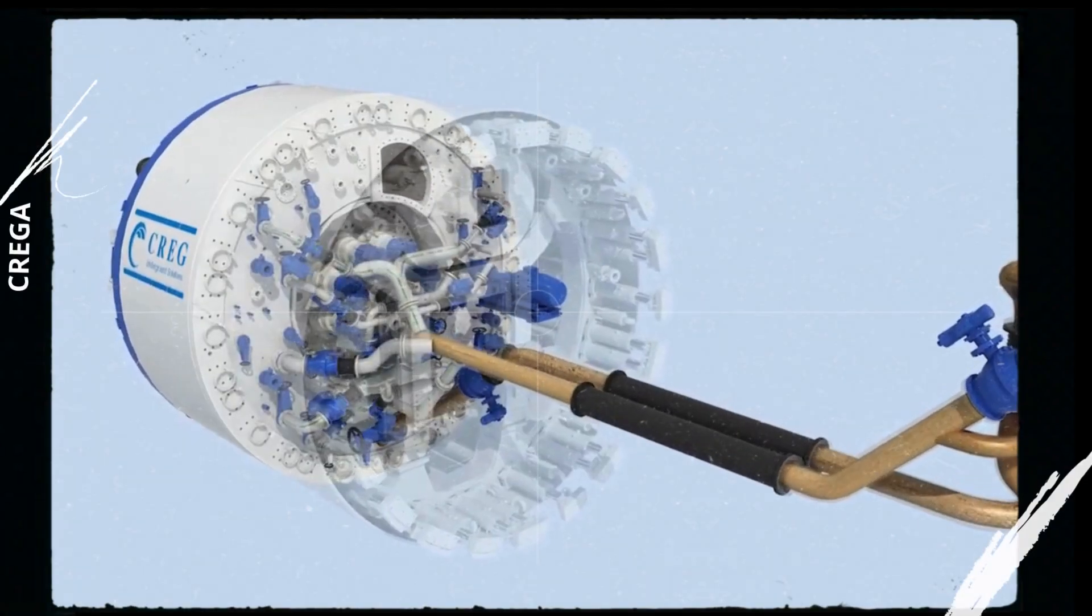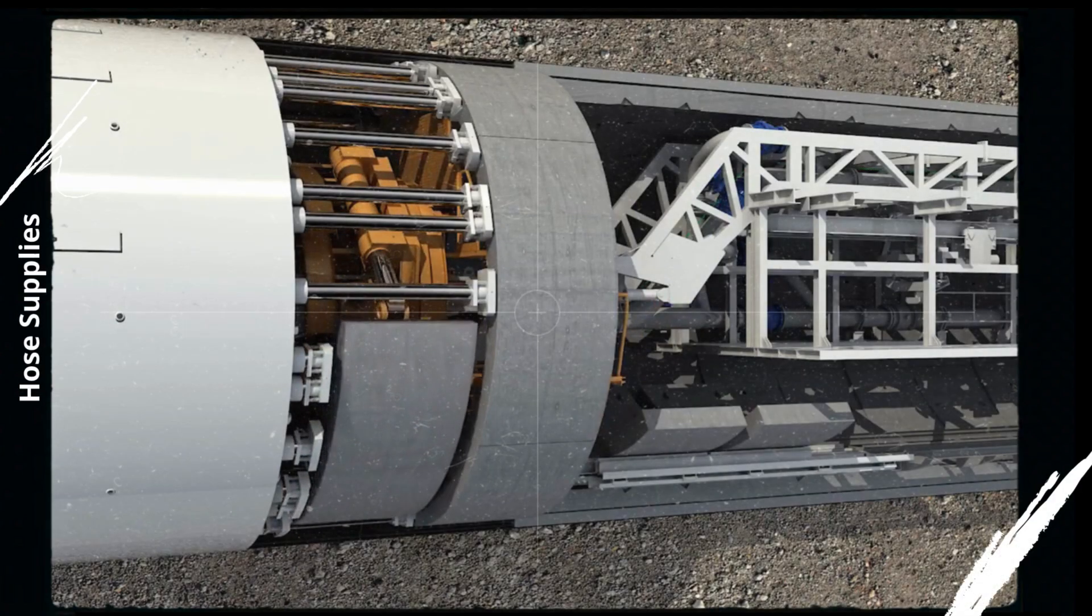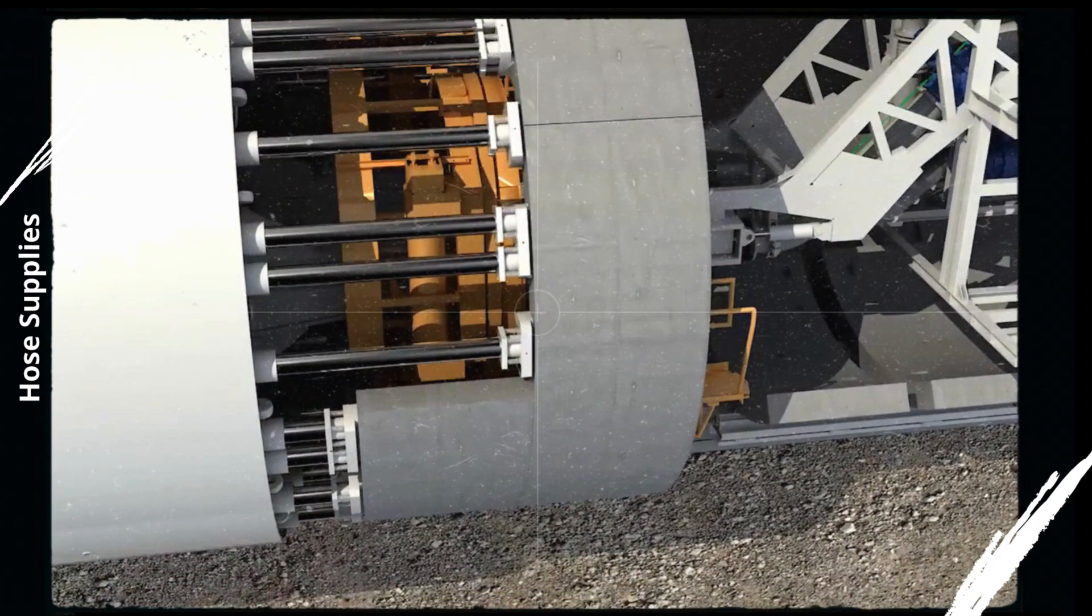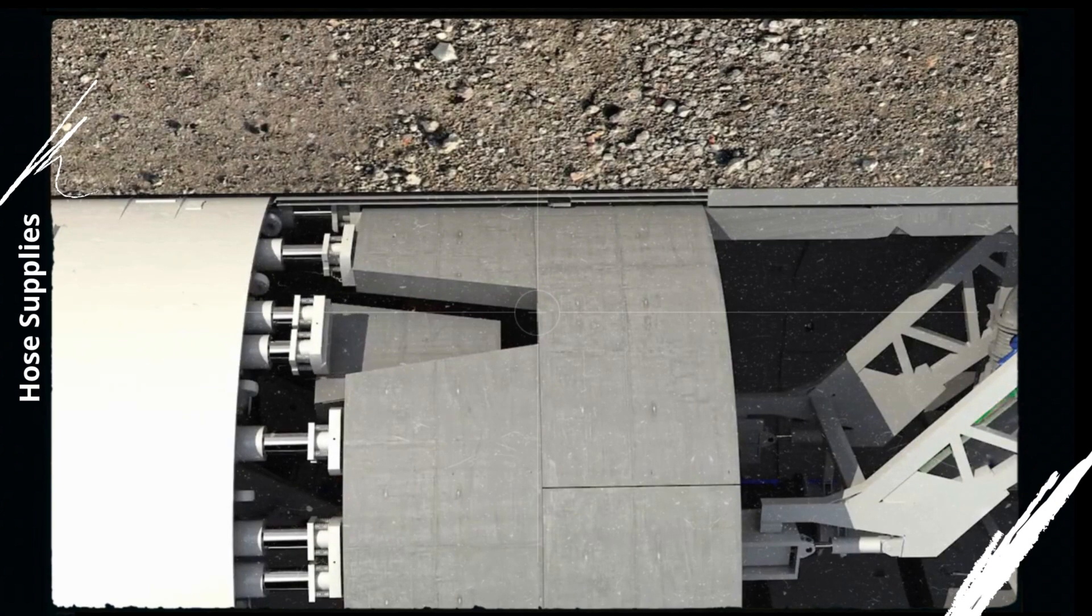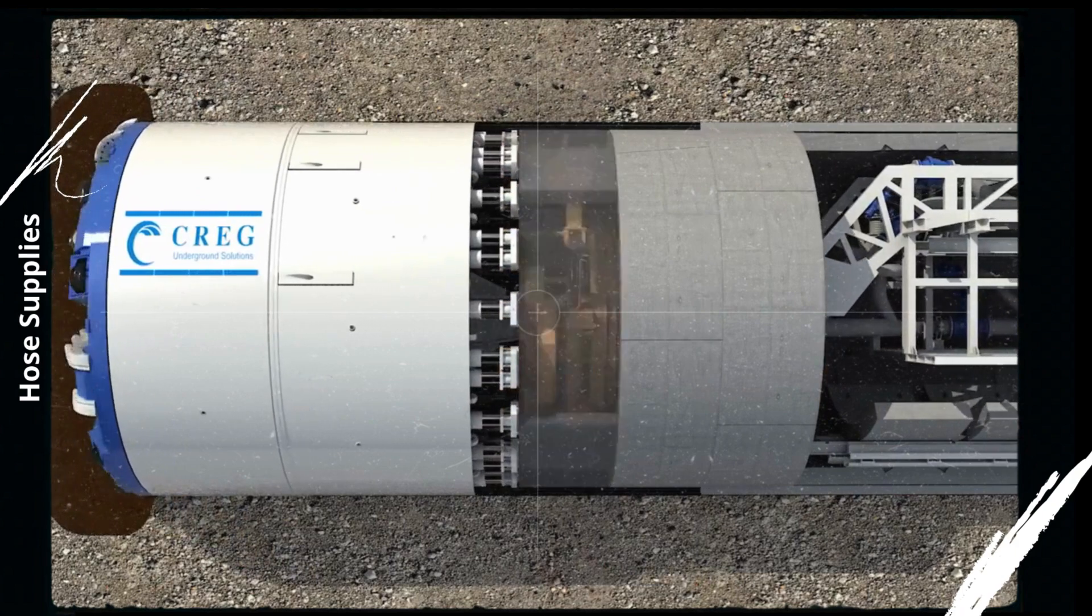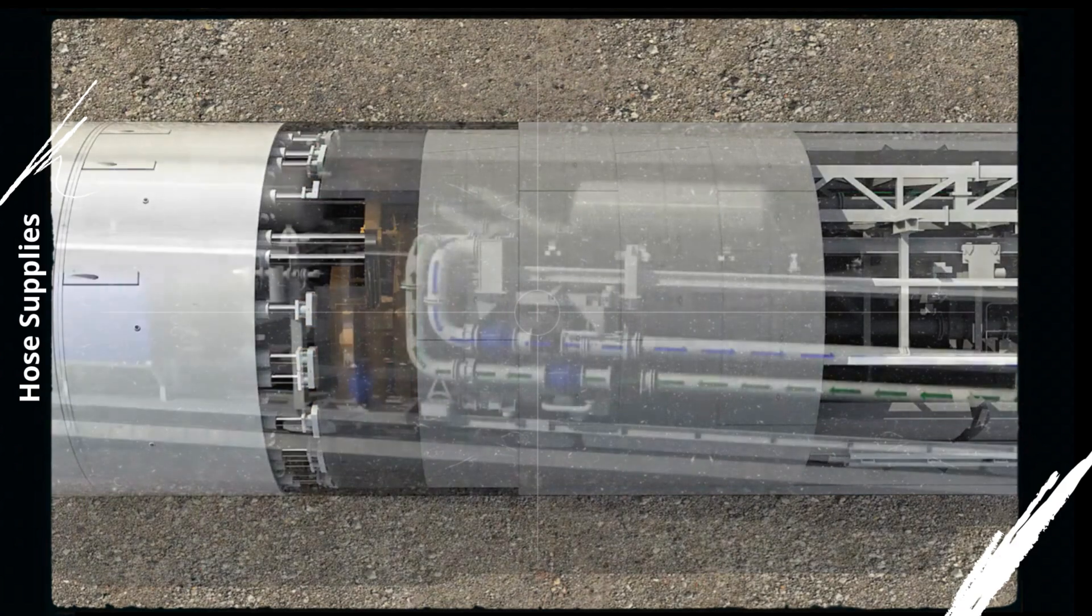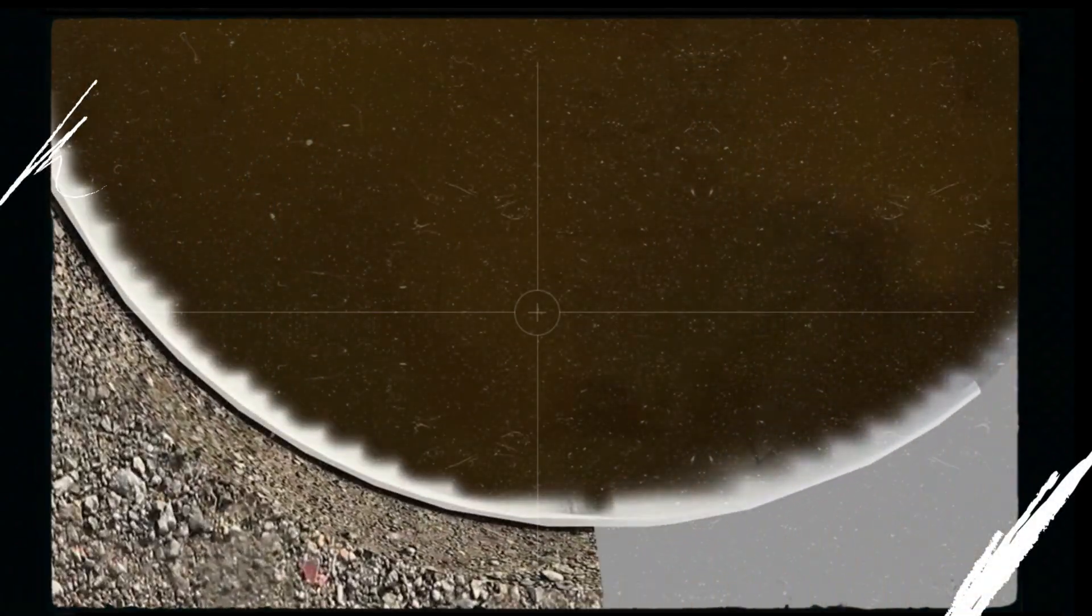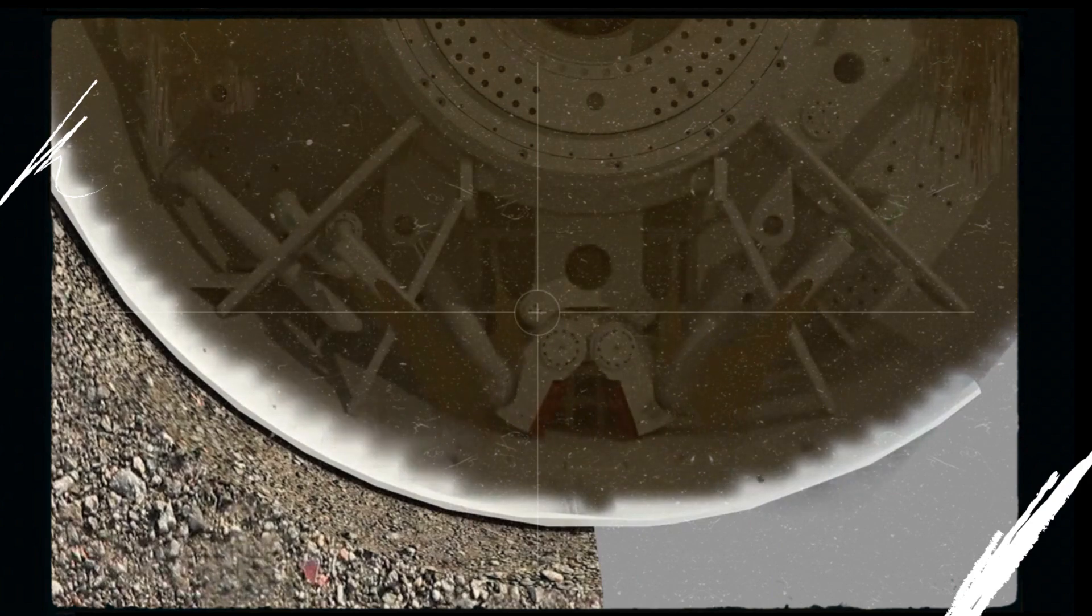As the TBM moves forward, hydraulic jacks push the machine ahead while simultaneously installing precast concrete tunnel segments to form the tunnel lining, providing immediate structural support. The excavated material or soil is transported to the surface via a conveyor or slurry system.